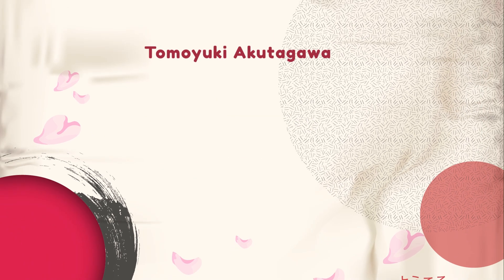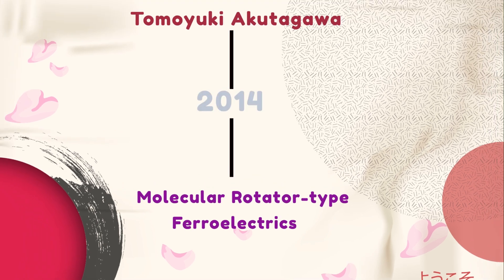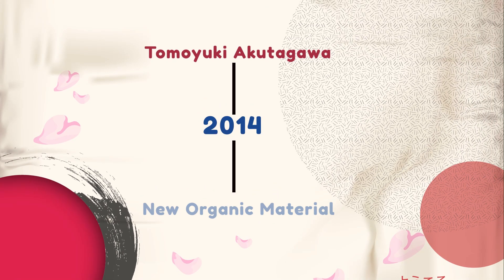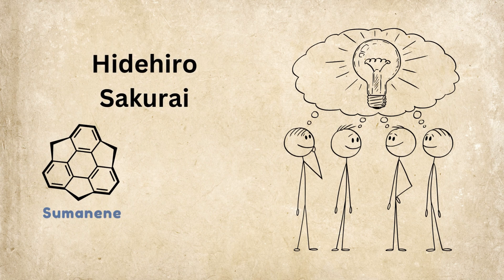One of them was Tomoyuki Akutagawa who had already made a name for himself back in 2009 by developing molecular rotator type ferroelectrics. By 2014, he was on a hunt for a new organic material that could show ferroelectricity. If you are not familiar with ferroelectricity, no worries, I'll explain it in detail a bit later. So one day during a group meeting, he came across a molecule that had been synthesized by one of the group members, Professor Hidehiro Sakurai. That molecule was called sumanene.